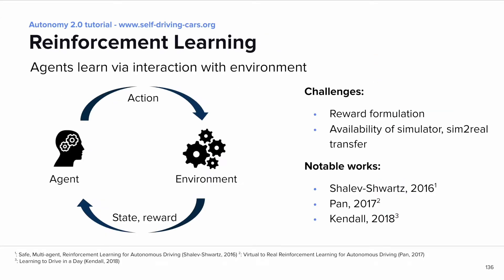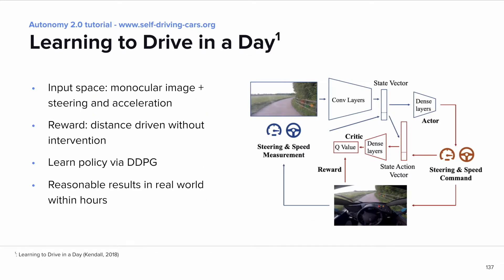Let's come to another important topic: reinforcement learning, where agents learn through interactions with the environment. This has been very successfully applied to different tasks, such as playing Go and playing Atari games. But there are certain challenges when applying this to autonomous driving — namely, we need to manually come up with a good reward, we need a realistic simulator to train these models in, and potentially methods for sim-to-real transfer. One such method is 'Learning to Drive in a Day.' Here they use monocular camera images plus steering/acceleration values as inputs, processed by a CNN, and learn a policy using the deep deterministic policy gradient method. They manage to show feasible real-world driving results within a few hours.